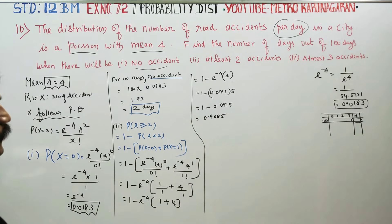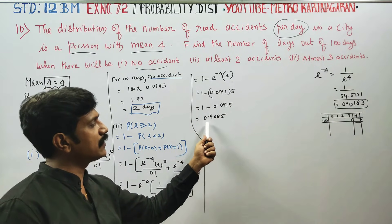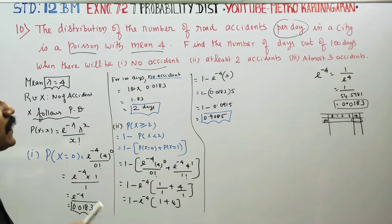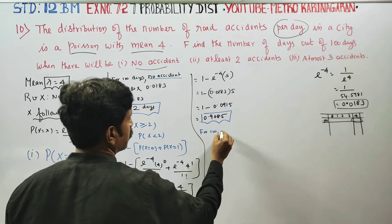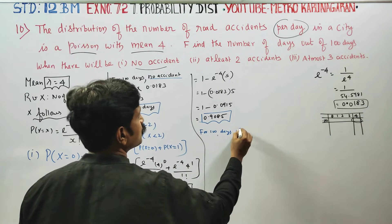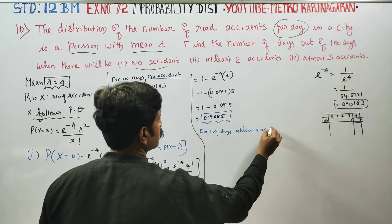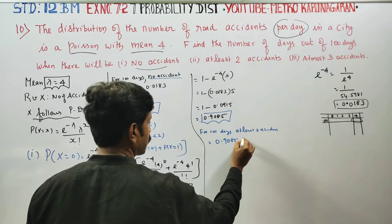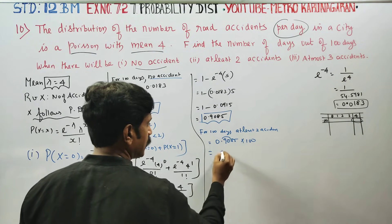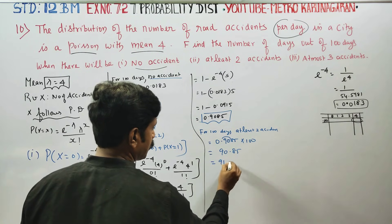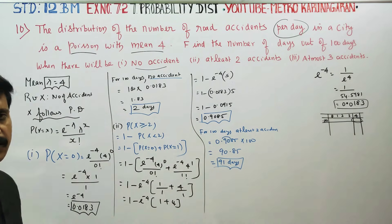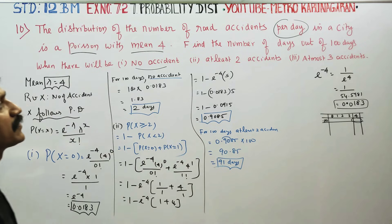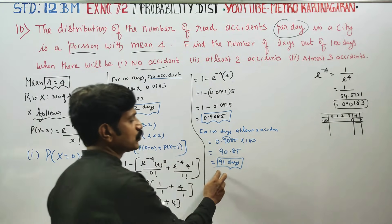For 100 days, the number of days with at least 2 accidents is 100 multiplied by 0.9085, which equals 90.85, approximately 91 days.